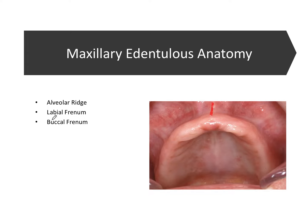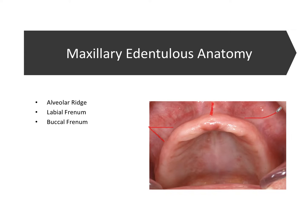The buccal frenum — buccal referring to the cheeks — are on either side of the alveolar ridge. They're a little more faint, but we can see the right buccal frenum and the left buccal frenum, which appears to be a bit more anterior. They're not always symmetric like this. The buccal frenum again restrict or secure movement of the buccal mucosa.